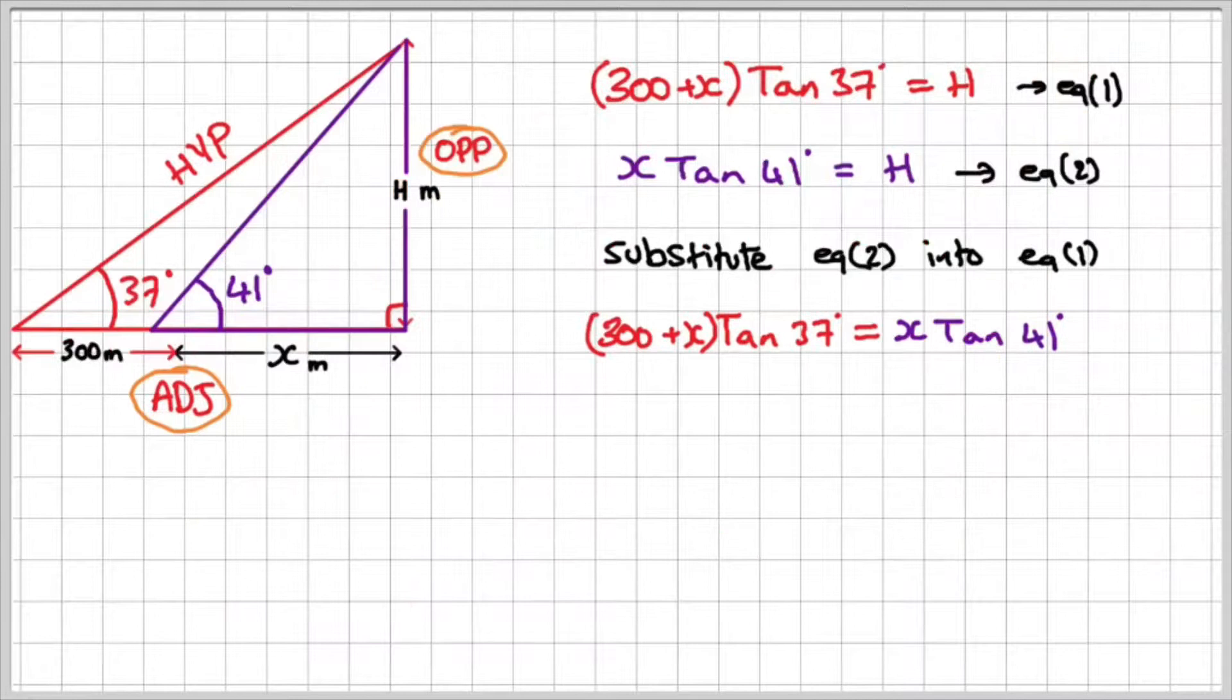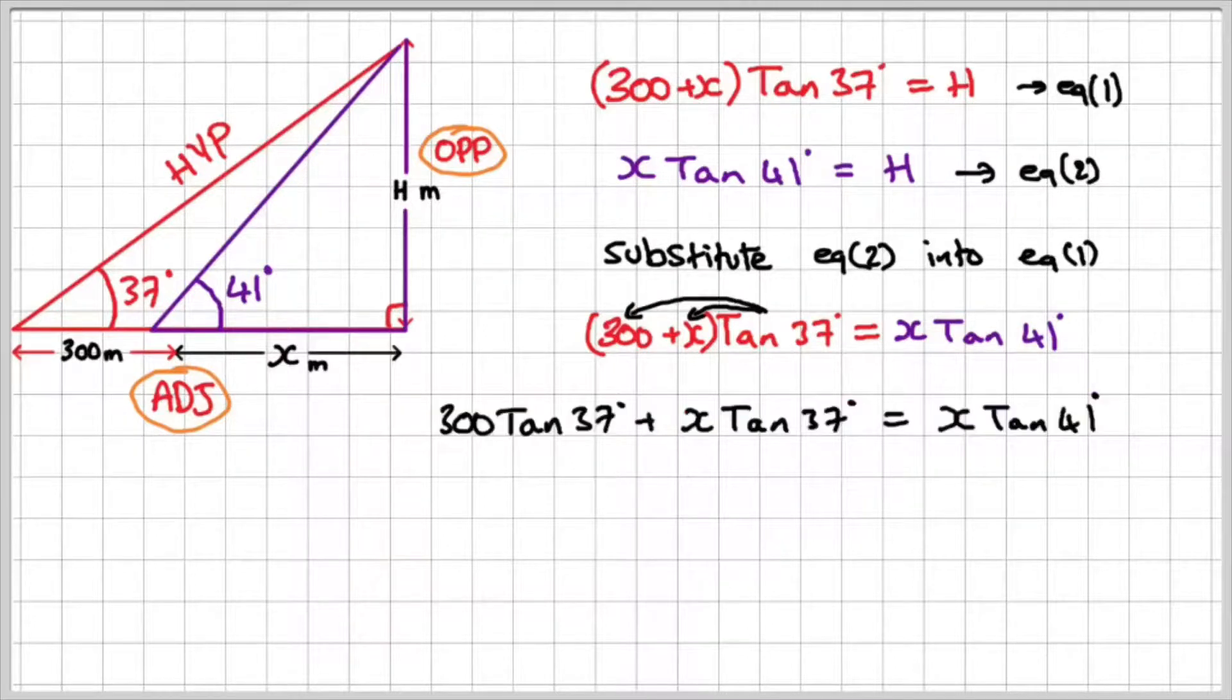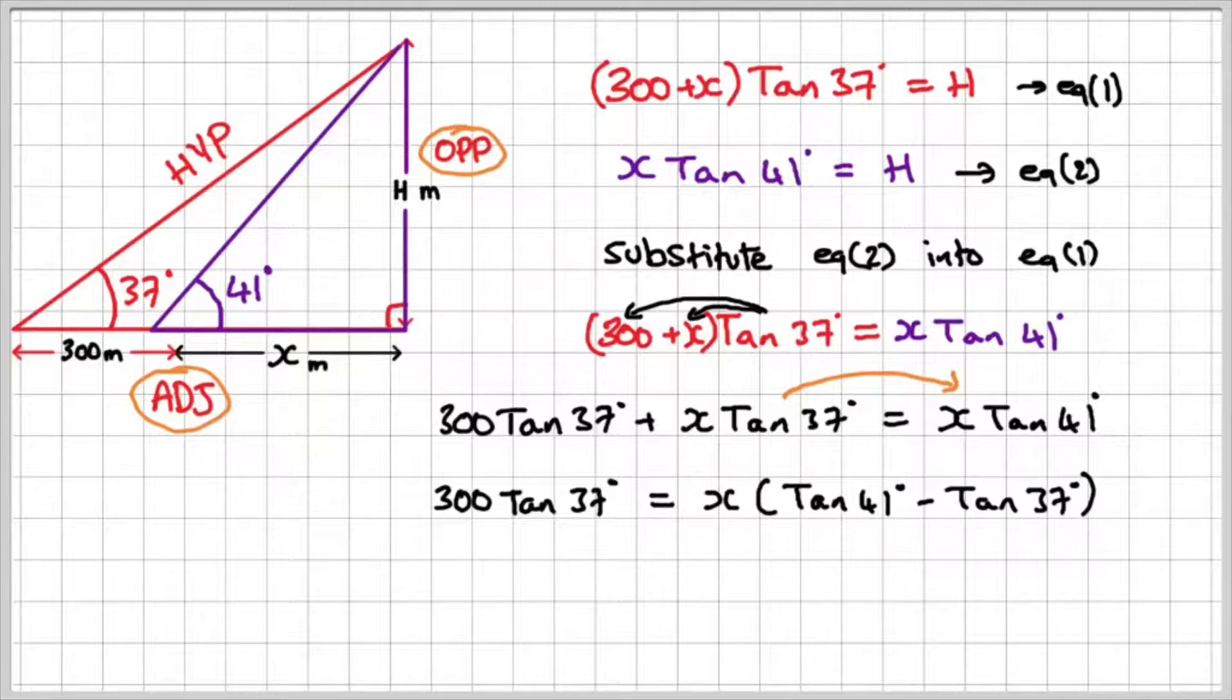So carrying on, if I expand 300 plus x with tan 37, I get 300 times tan 37 plus x times tan 37 is all equal to x times tan 41. Now what I'm going to do is I'm going to subtract x times tan 37 from both sides. And then if I take out x as a common factor, I can write 300 times tan 37 is equal to x times tan 41 minus tan 37.